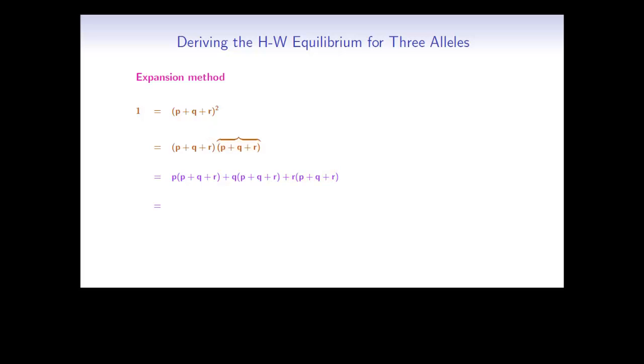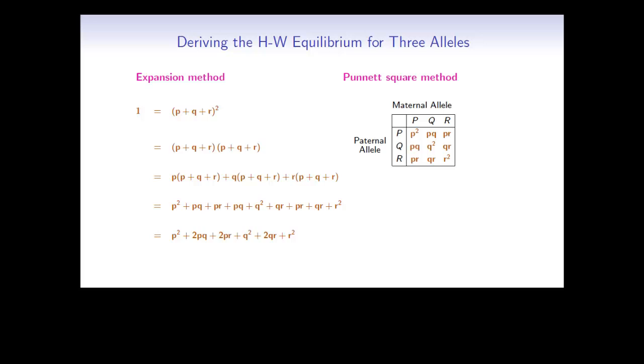Now each of these we can also expand the brackets. So we get p squared, pq, pr, and so on similarly for the other two brackets as well. Now collecting like terms, we get p squared. We have two copies of pq, and so on for the rest of them. Notice that this is the same final answer as we got with the Punnett square method.